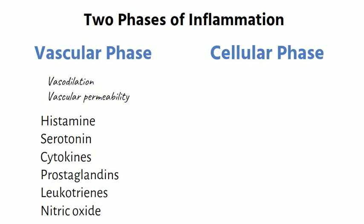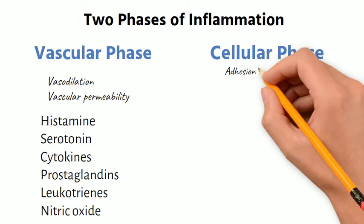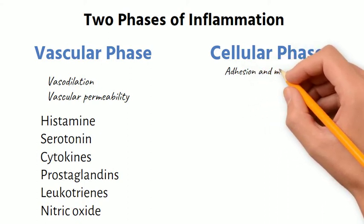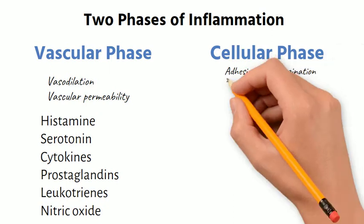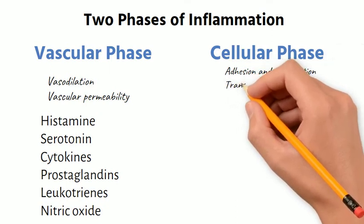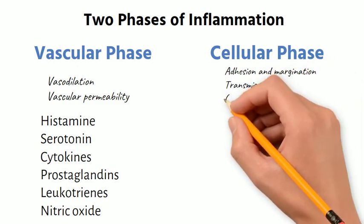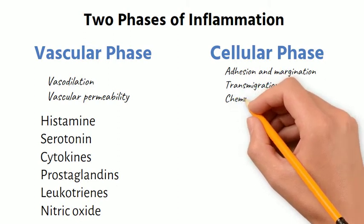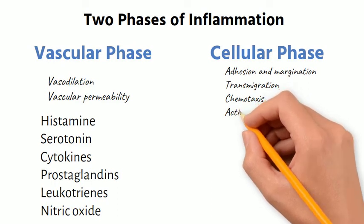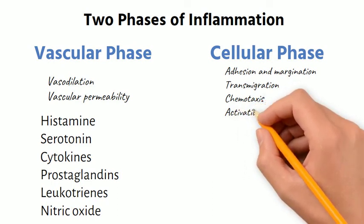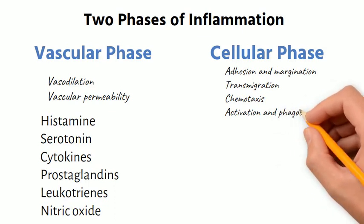There are four steps in the cellular phase of inflammation. During adhesion and margination, the white blood cells roll along the wall of the blood vessel and adhere to the endothelial cells. The cell then squeezes through the blood vessel wall during the process of transmigration, and then finds its way to the site of injury in the process of chemotaxis. Finally, the white blood cell reaches the site of injury where it is activated, leading to phagocytosis.